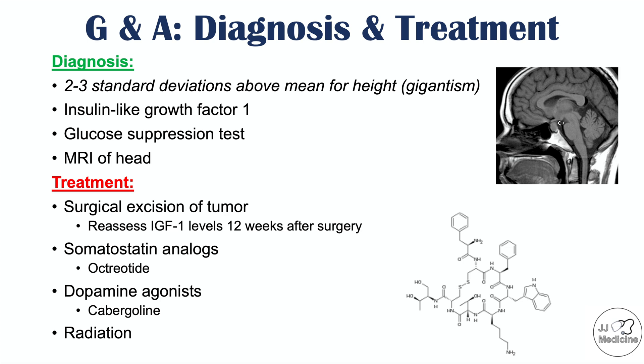In summary, for diagnosis, measurement of IGF-1 is key — it will be elevated in both conditions. It is important not to measure growth hormone directly as it is not a stable measurement. A glucose suppression test is also important. For treatment, options include surgical excision of the tumor, somatostatin analogs, and dopamine agonists.